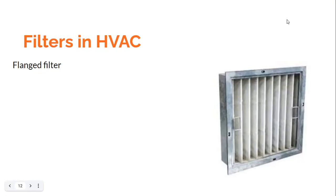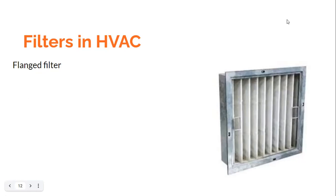This one is the header type filter. The headers are quite similar to the flanges in function, and the headers can also be provided on the entry side, exit side, or on both sides. This header type filter can be mounted on universal filter holding frames or for sliding fitment on a channel track.